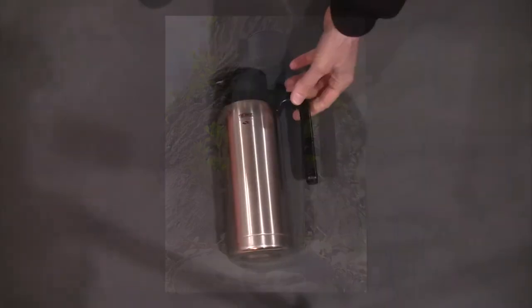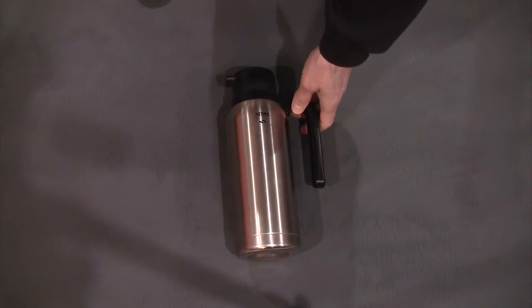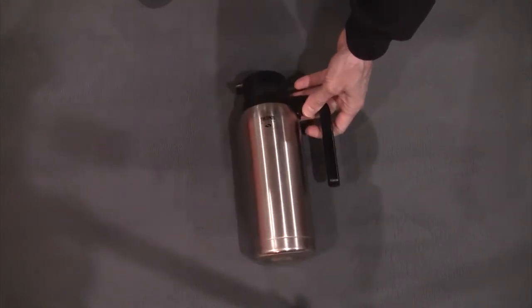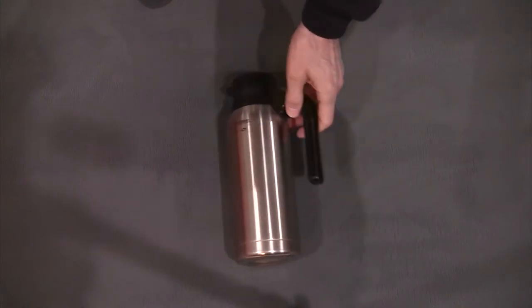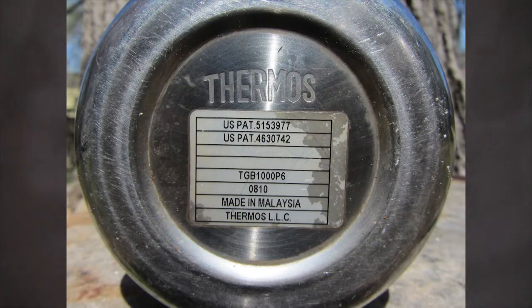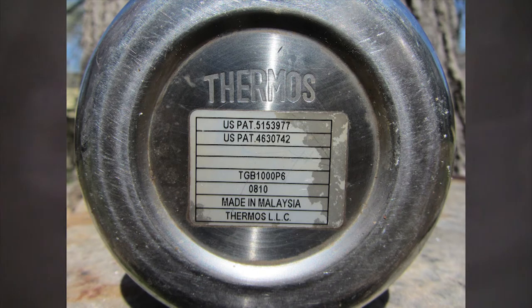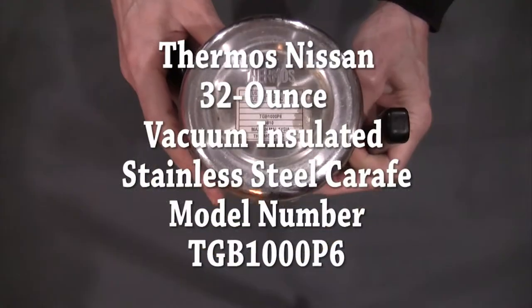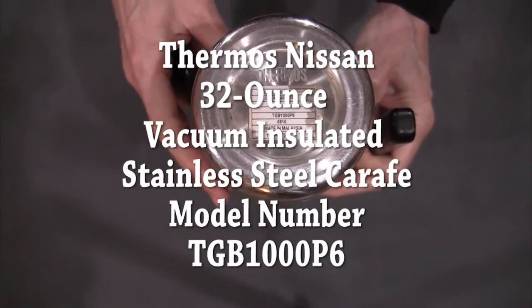Okay, this is just a quick video on how to disassemble a 32-ounce Nissan thermos vacuum stainless steel model. Let's see if you can see that, if not I'll put this in the, just a quick shot of the model number, but I'll also put that down in the information.